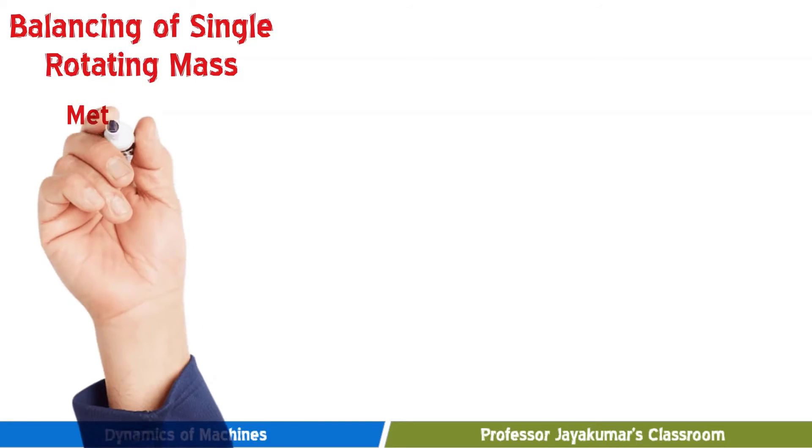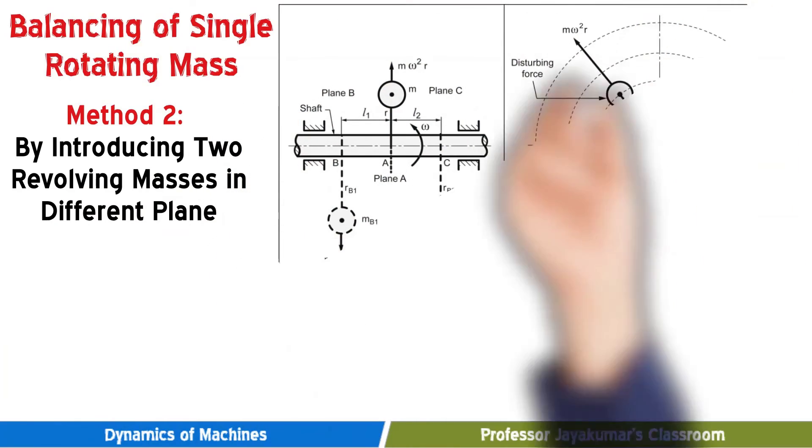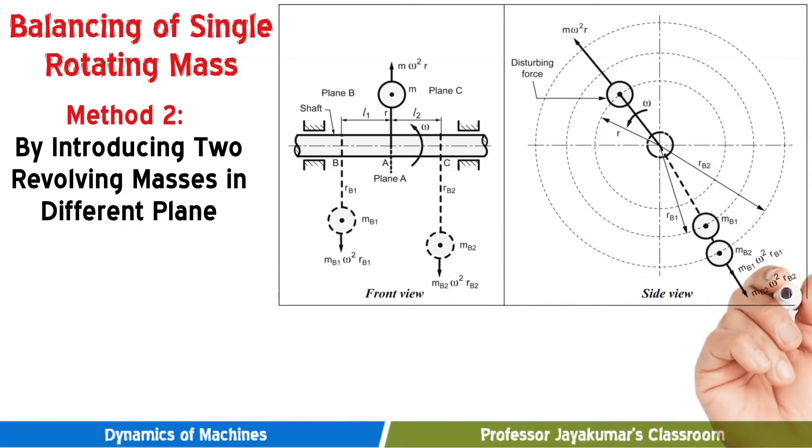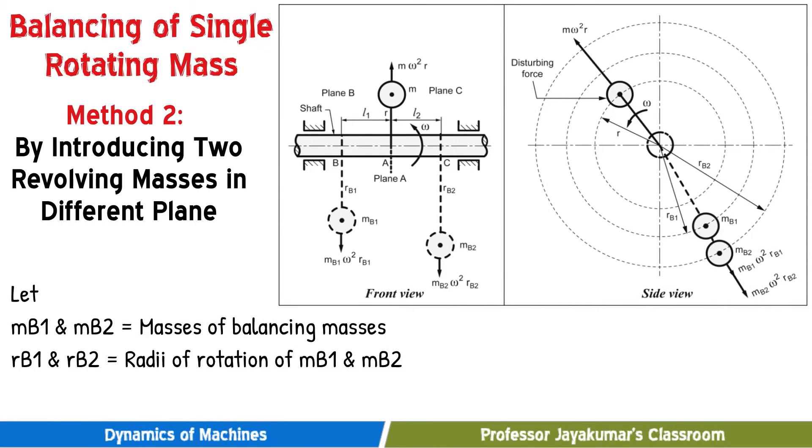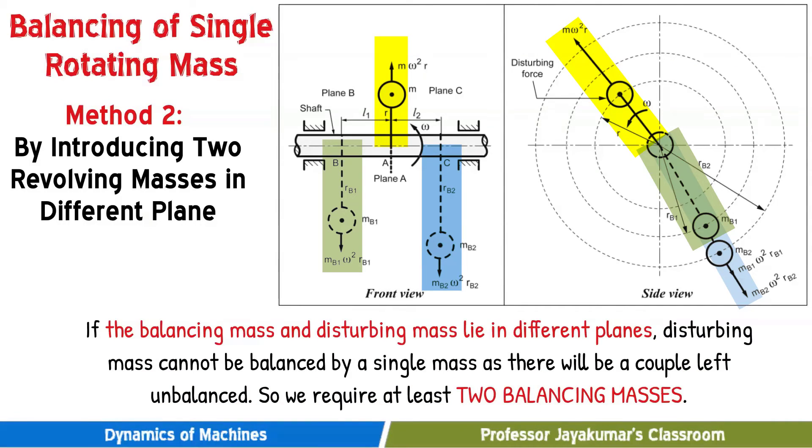Now let us move on to the method 2. Sometimes it is not possible to introduce balancing mass in the same plane in which disturbing mass m is placed. In that case, two masses can be balanced in different planes. As you could see in the front view and side views, two balancing masses namely mb1 and mb2 are placed in plane b and plane c in two different planes. Here the out of balance force is acting in plane a. When we try to balance that by introducing the masses in plane b and plane c, we are facing with new problem of couple.